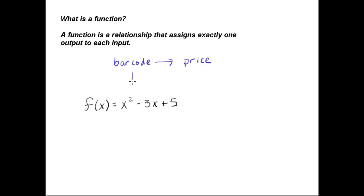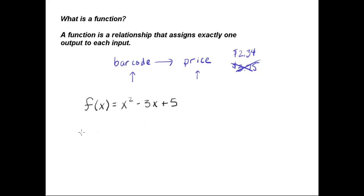Our input is our barcode, and the output is the price of that item. We wouldn't want to scan a barcode one time and get a price of $2.34, and the second time you scan it, maybe $3.75. We wouldn't want that to happen. With functions, we want to make sure that for each input there's only one output. We can't have the situation where we have two different outputs.